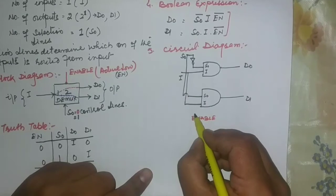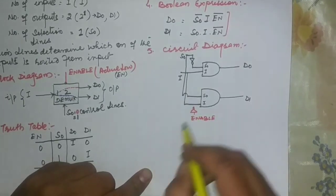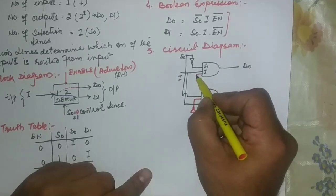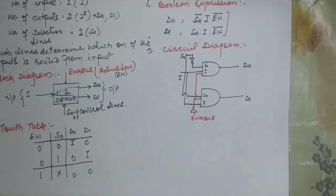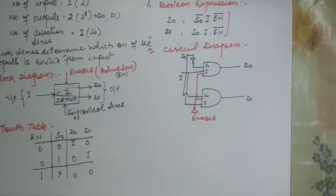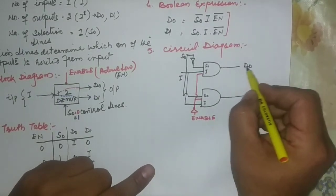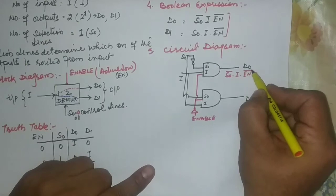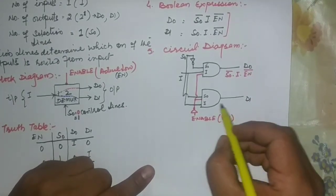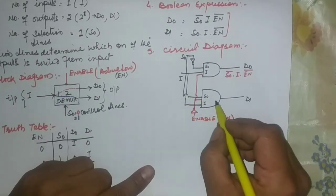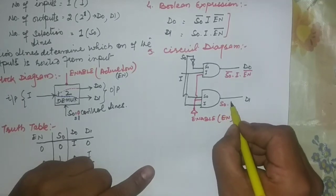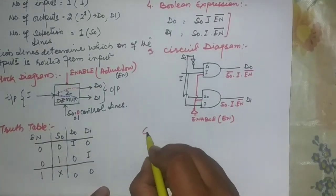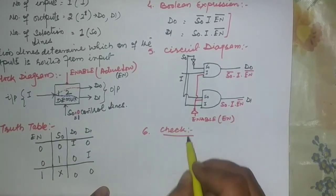The third input to both AND gates is the enable signal, which is active low. Both AND gates receive this enable signal. So the equation from the circuit is: D0 = S0 complement · i · En complement, and D1 = S0 · i · En complement. This is the complete circuit diagram.